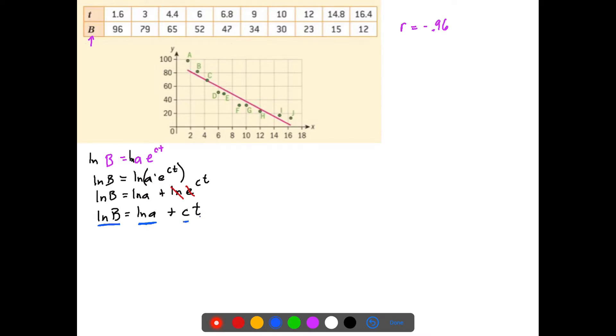Now this is interesting because what I have here then is the natural log of B is equal to a constant here plus a constant times my X value. Or in other words, if I rearrange this just a little bit, I'm going to rewrite it as CT plus natural log of A, which now is Y equals MX plus B. So the Y intercept of this line would be the natural log of A, the C would be the slope of this line, and natural log of B would be the Y value. T, of course, is still my X value.